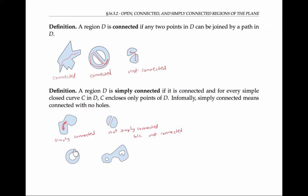This third region shaped like the letter O is not simply connected either. It is connected, because if I have any two points in the region, I can connect them with a path in the region. However, if I draw a simple closed curve that goes around the O, then that simple closed curve contains points of the plane that are not in the region D. And for that reason, this region is not simply connected.